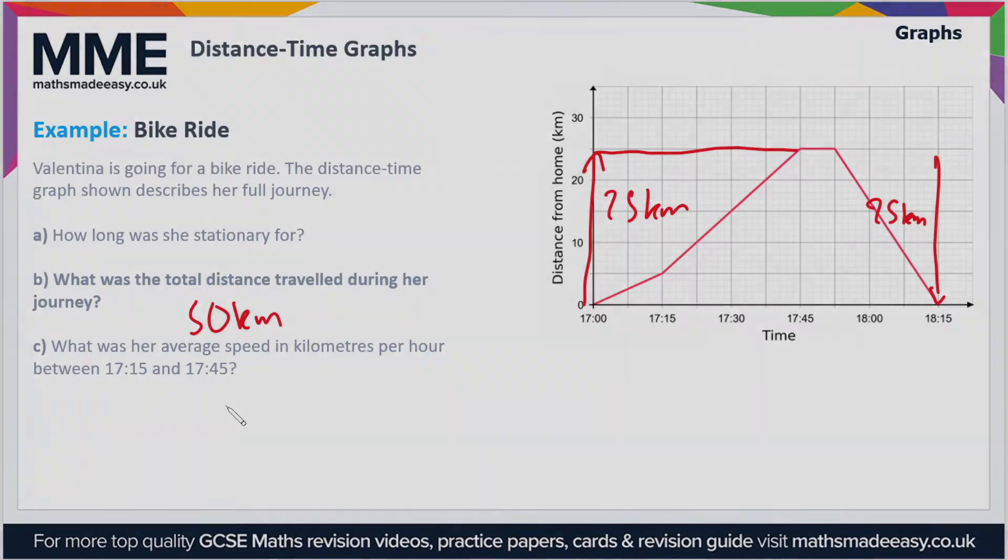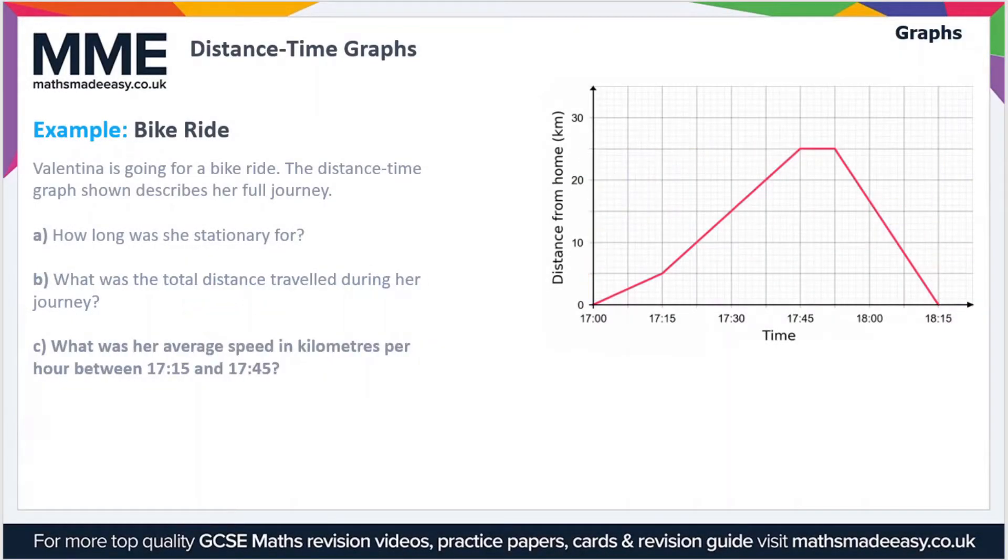Finally then, let's move on to part C. What was her average speed in kilometers per hour between 7:15 and 7:45? Well, let's start off by marking these points on the graph. So 7:15 is here, 7:45 is here, so the part of the graph we're interested in is this section here.